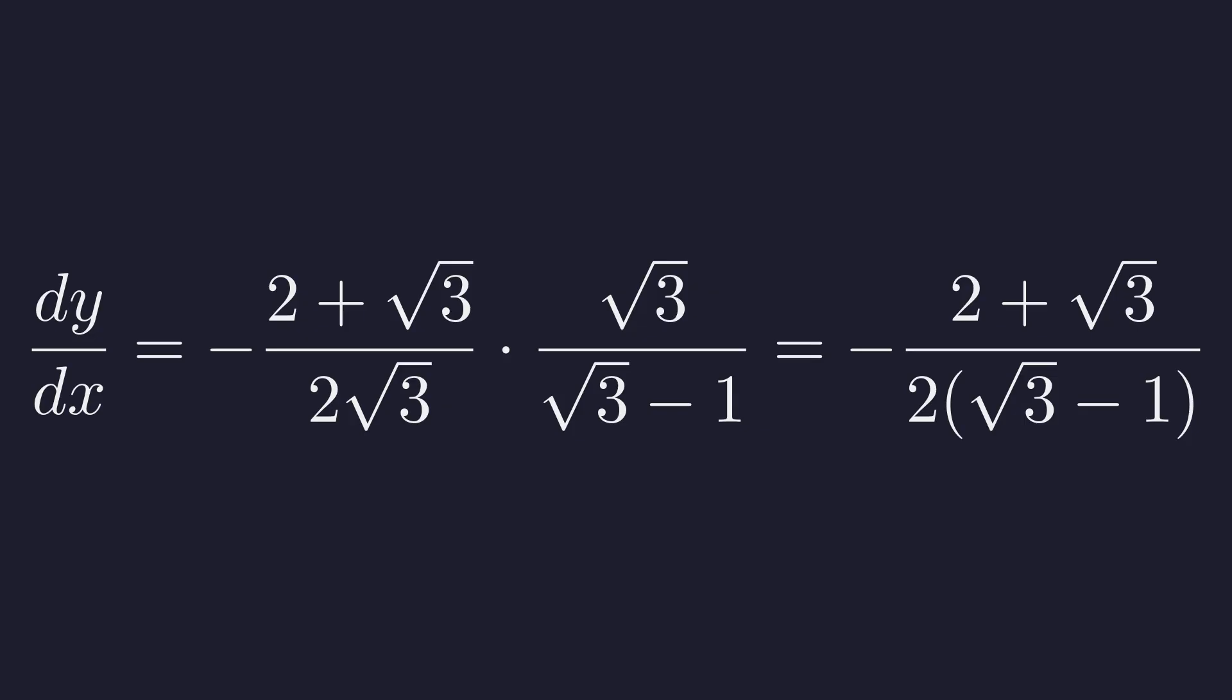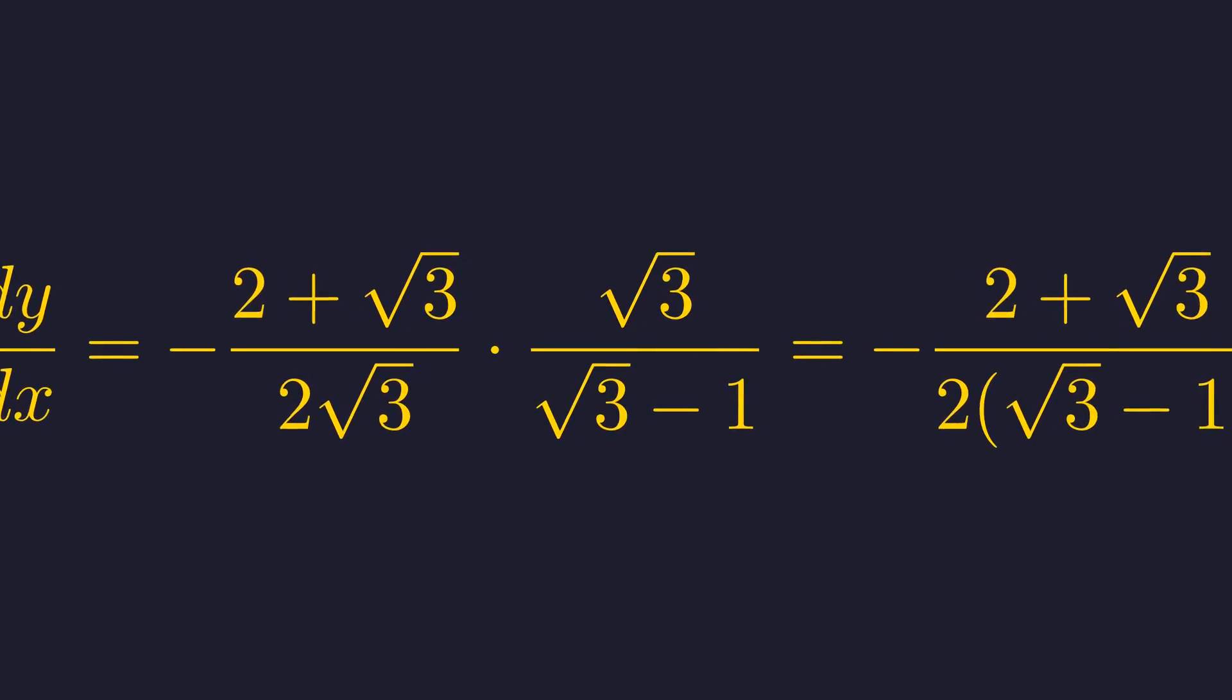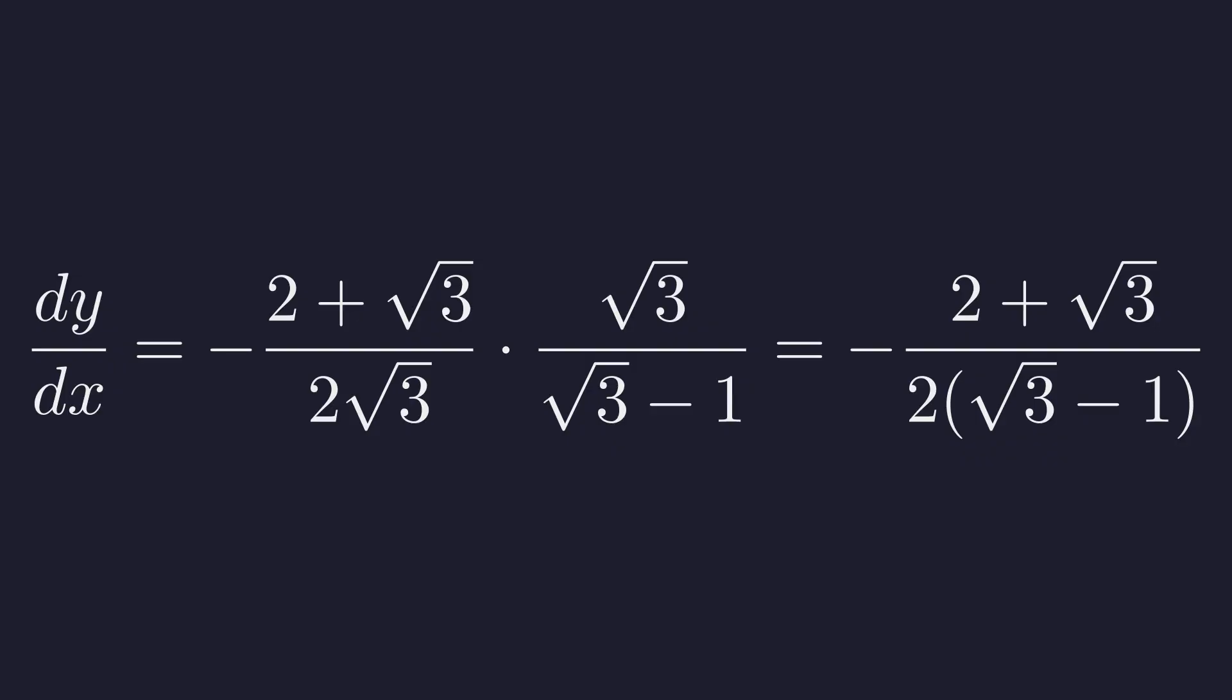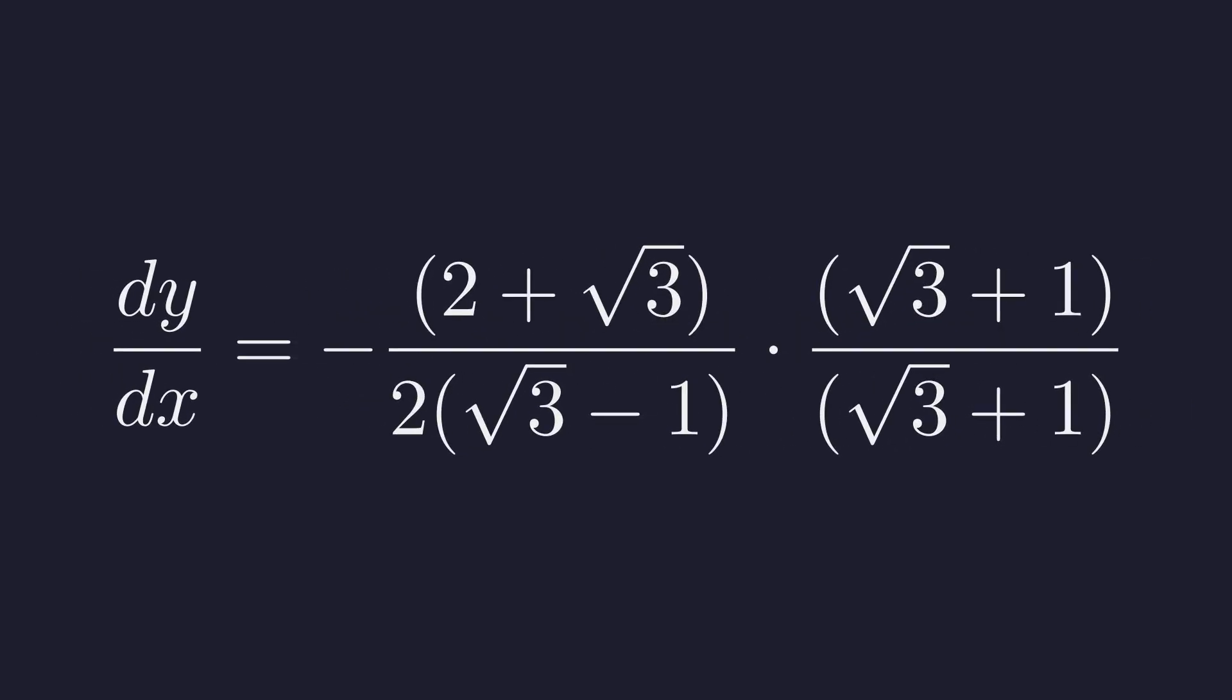We must rationalize the denominator. To do this, we multiply the numerator and denominator by the conjugate of the denominator, which is the square root of 3 plus 1. This is equivalent to multiplying by 1.